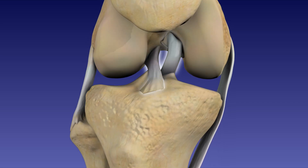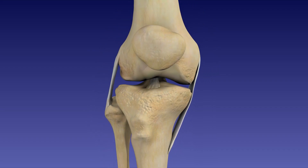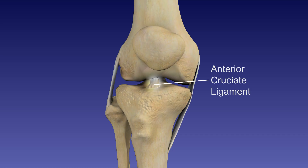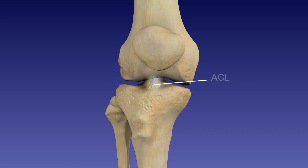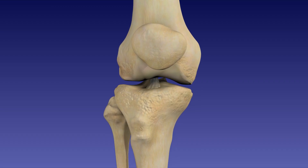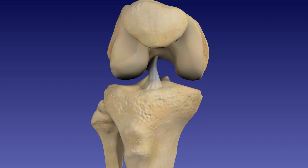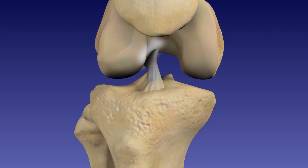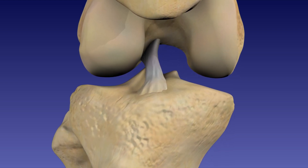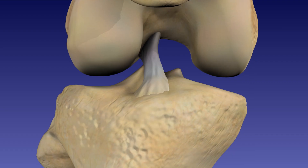The two cruciate ligaments crisscross within the joint capsule, stabilizing the joint in the sagittal plane. This is the anterior cruciate ligament, or ACL. It connects the anterior intercondylar area of the tibia to the posterior medial surface of the lateral condyle of the femur. The ACL prevents posterior displacement of the femur on the tibia and hyperextension of the knee joint.